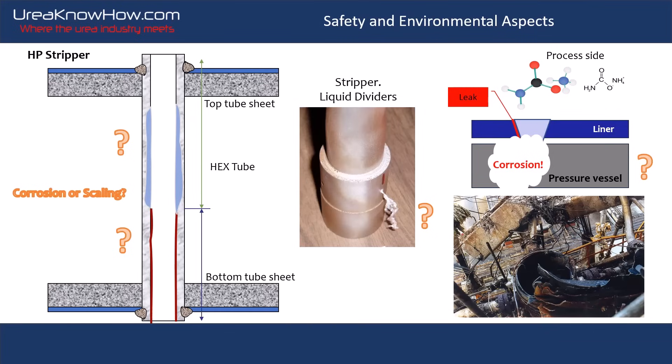You'll learn about leak detection systems, their importance in preventing failures, and how to ensure reliability of critical equipment. Additionally, we will address safety, health and environmental concerns, including emission sources, flare systems, containment strategies and explosion prevention. This comprehensive approach ensures both operational efficiency and compliance with safety standards.